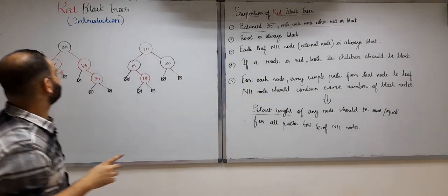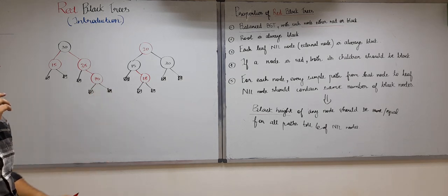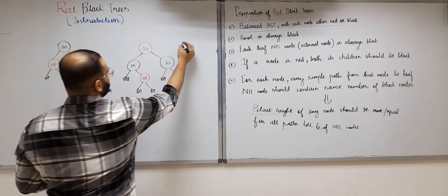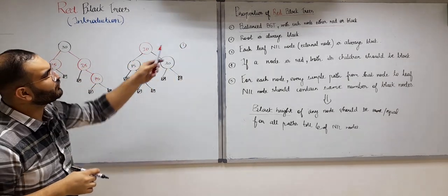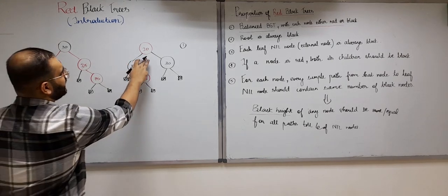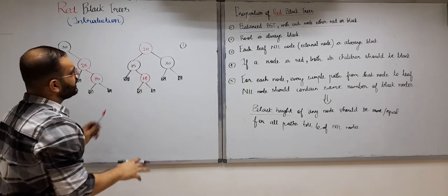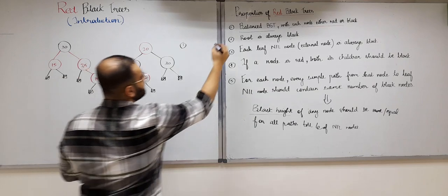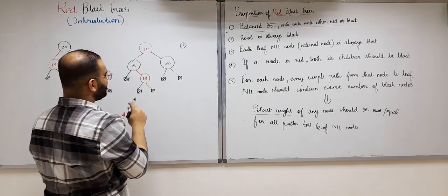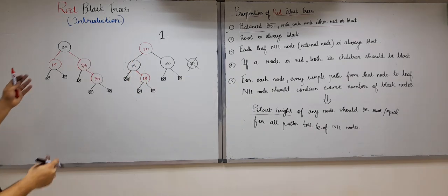Now let's take two examples of binary search trees and determine if they are red-black trees. In the first example: it is a binary search tree — 30 is greater than 20, 15 is less than 20, 18 is greater than 15 — so the first property is followed. But the root is not black, so it violates the second property. Let's move to the second example.